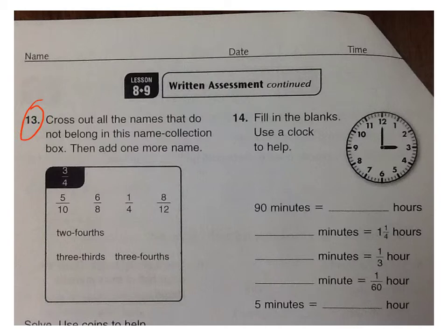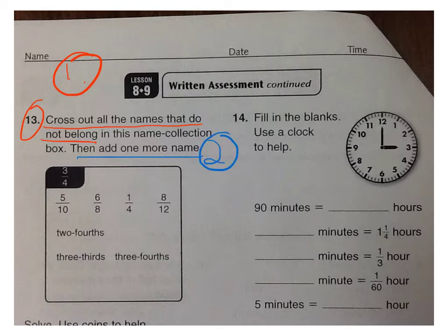Number 13. Cross out all the names that do not belong in this name collection box, then add one more. So there's two steps to this problem. First, you're going to cross out all the names that do not belong. Whichever ones there are, cross them off. Not all of these names are correct. You need to cross some of them off. The other part to the problem is then add one more. You need to add one more to this name collection box. So think of another way to write 3 fourths.